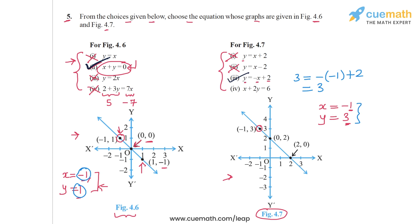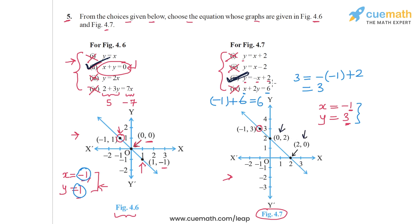Let's also check the fourth equation, which is x plus 2y equal to 6. If we substitute x equal to minus 1 and y equal to 3, we get minus 1 plus 2 times 3 or 6 on the LHS and 6 on the RHS. So this is actually satisfied, meaning the fourth equation is also satisfied by minus 1 comma 3. Therefore, the only equation we can confirm as the unique match based on our elimination is y equal to minus x plus 2. You can also verify that the other solutions 0 comma 2 and 2 comma 0 lie on the same equation.